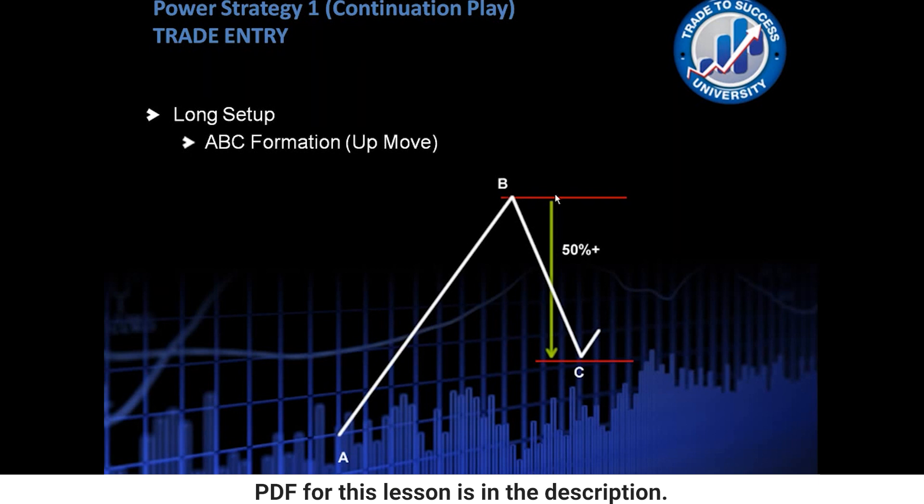We would need the price to go down at least 50 pips, which is 50% of the A to B move, for us to validate this as an ABC formation.